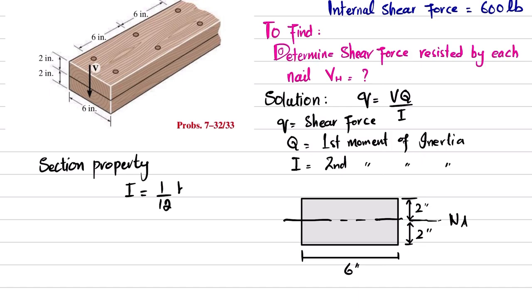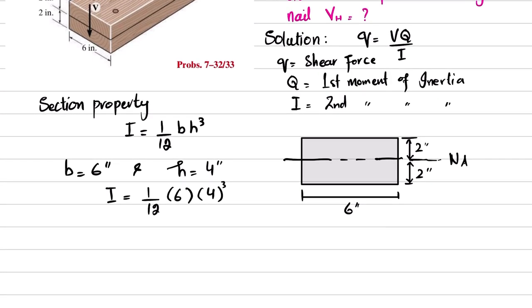The width is given as six inches. So I for this rectangular cross section is one over twelve times b times h cubed. B equals six inches and height equals four inches. When you solve this, you will get I equals 32 inches to the fourth power.